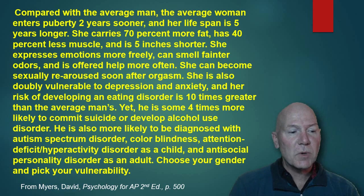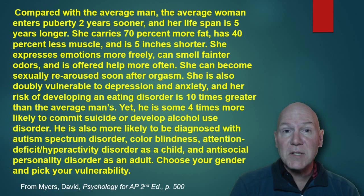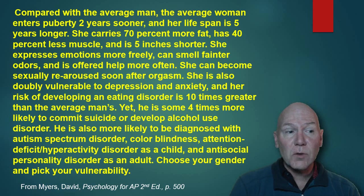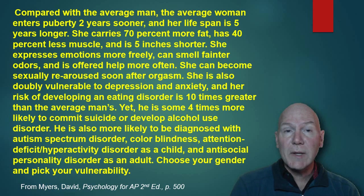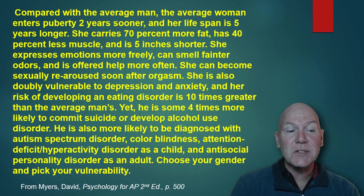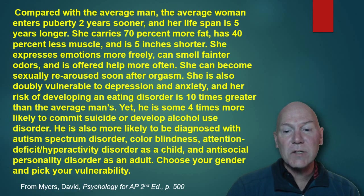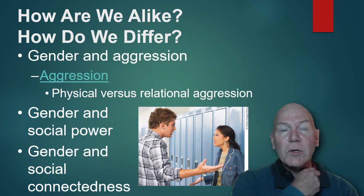Here's a quote from the textbook: compared with the average man, the average woman enters puberty two years sooner and her lifespan is five years longer. She carries 70% more fat, has 40% less muscle, and is five inches shorter. She expresses emotions more freely, can smell fainter odors, and is offered help more often. She is doubly vulnerable to depression and anxiety, and her risk of developing an eating disorder is 10 times greater. Yet he is four times more likely to commit suicide or develop alcohol use disorder, and more likely to be diagnosed with autism spectrum disorder, color blindness, ADHD as a child, and antisocial personality disorder as an adult. Choose your gender and pick your vulnerability — there are vulnerabilities for both.